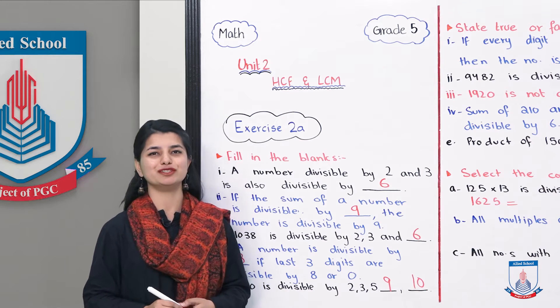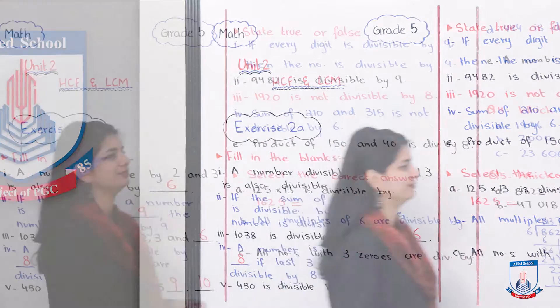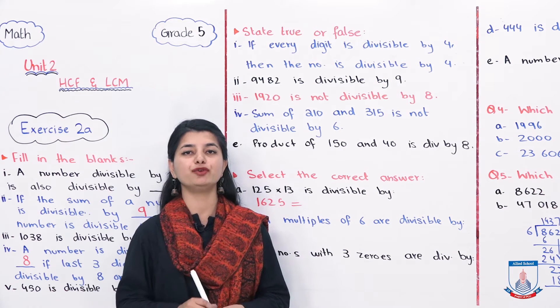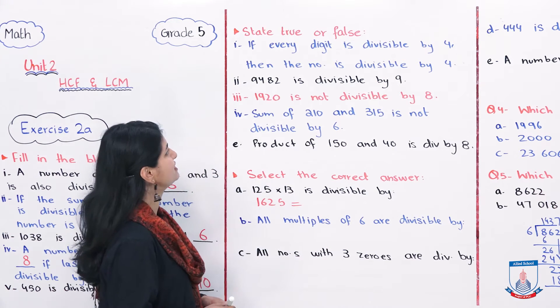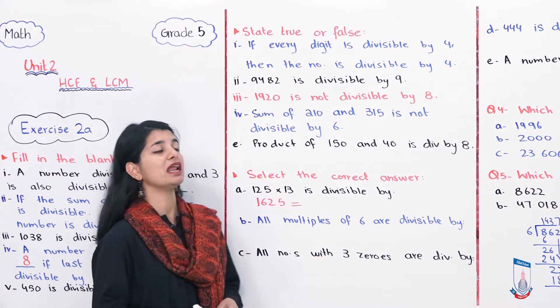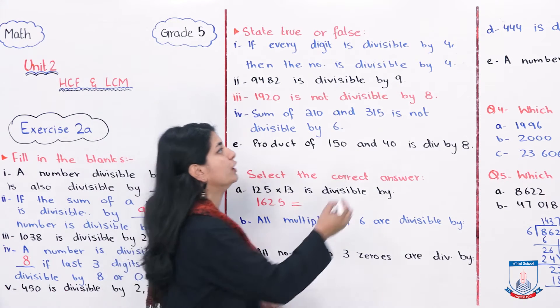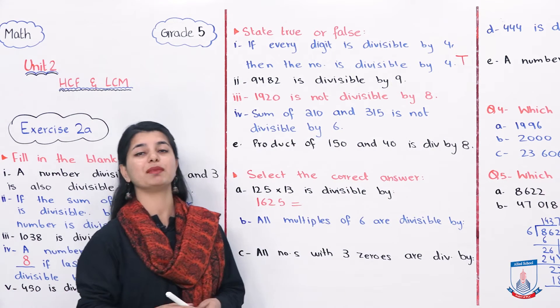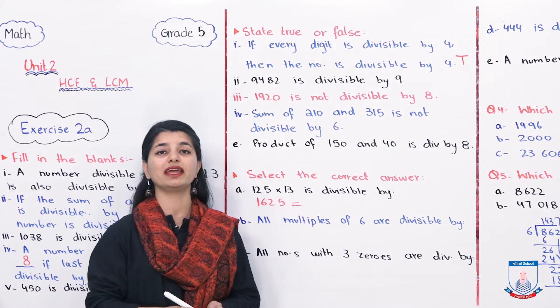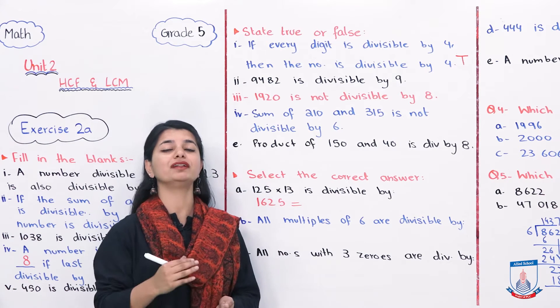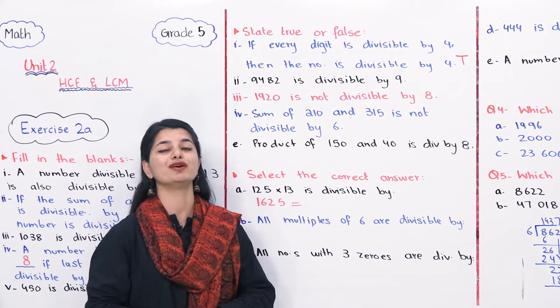Second question is: you have to tell if the statements are true or false. First statement is: if every digit in a number is divisible by 4, then the number is divisible by 4. So this is true, because if all digits are divided by 4, this means the sum is divisible by 4, and that means the last 2 digits are divided by 4, and for that reason we can say that this number is divided by 4.